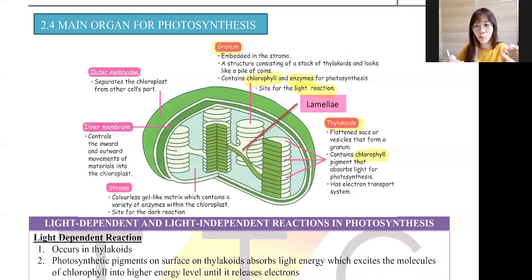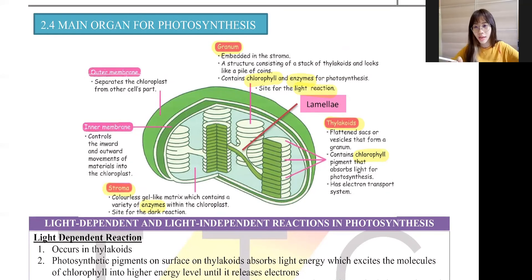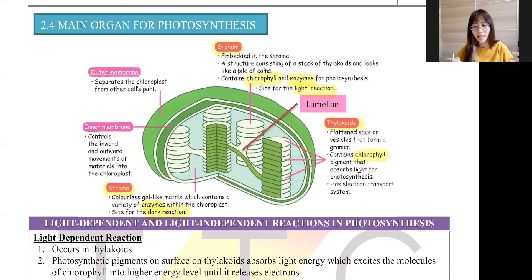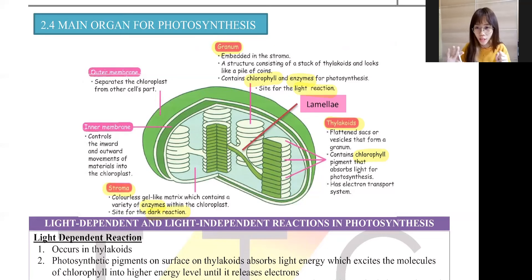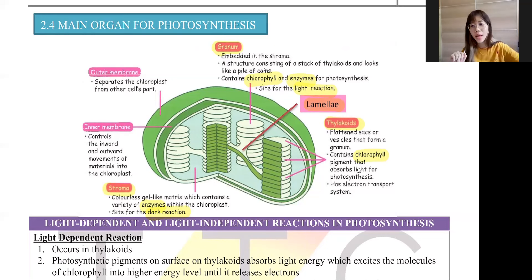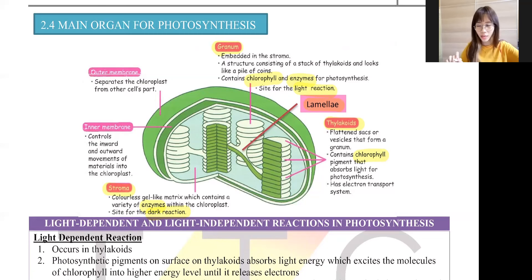The next important feature in this diagram is the space inside the chloroplast, which we call the stroma. The stroma also contains many enzymes needed for photosynthesis. In your syllabus, the dark reaction is called the 'light-independent reaction' — they are the same thing. I'll sometimes say 'dark reaction' because it's easier to visualize. You can also see that when you have two granum structures, they are connected by a bridge called the lamella — not the fish lamella, but the connection bridge between grana, just like the sky bridge connecting the KLCC towers.